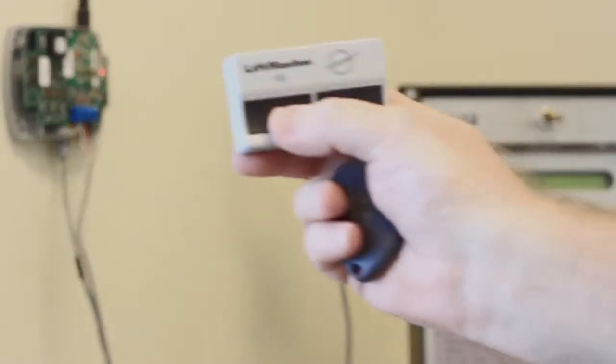The receiver will now accept any transmitter that matches the facility code just programmed into the receiver.